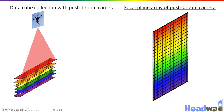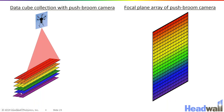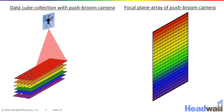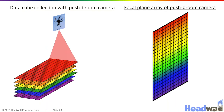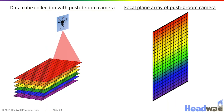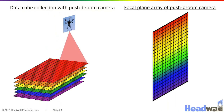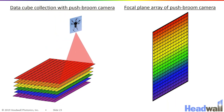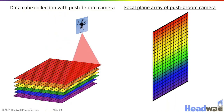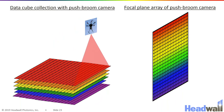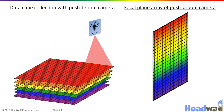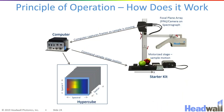And in the other dimension is giving me spectral information. As my drone flies past, every time I move one spatial pixel, I will collect one frame on the focal plane and eventually build up an entire data cube.